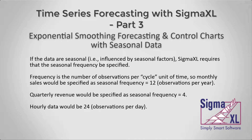If data are seasonal, influenced by seasonal factors, SigmaXL requires that the seasonal frequency be specified. Frequency is the number of observations per cycle, so monthly sales will be specified as seasonal frequency equals 12. We expect the sales to be consistently influenced by month — for example, December sales would be higher than those from January. Quarterly revenue would be specified as seasonal frequency equals 4, and hourly data would be 24.